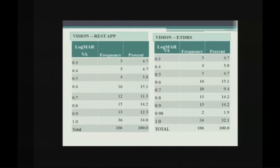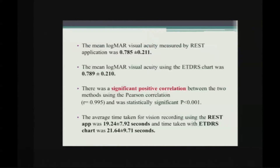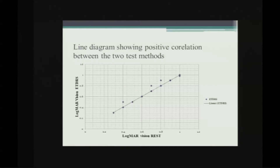Once the visual acuity was recorded, we converted it into logMAR visual acuity for both the REST app and the ETDRS chart. The mean logMAR visual acuity measured by the REST app was 0.785 ± 0.211, and with the ETDRS it was 0.789 ± 0.211. There was a significant positive correlation between the two test methods using Pearson correlation, with a p-value less than 0.001. The time taken was also noted: trainees using the REST app recorded results in 19 seconds, while the ETDRS chart took around 21 seconds.